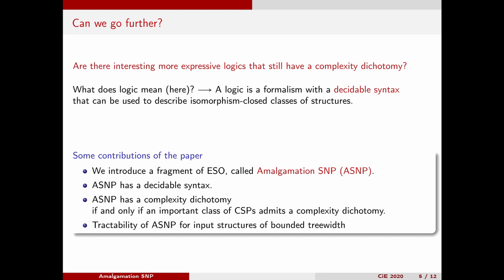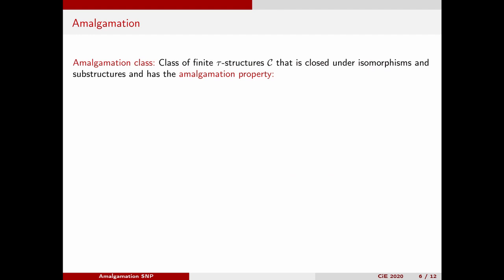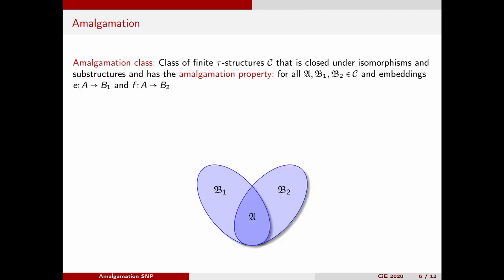As another application of the connection to CSPs, we use known results about CSPs to derive that amalgamation SNP sentences can be evaluated in polynomial time on instances of bounded tree width. To define amalgamation SNP, we first have to define amalgamation classes. These are classes of finite structures that are closed under isomorphisms and sub-structures, and that additionally have the amalgamation property.